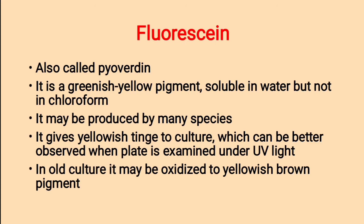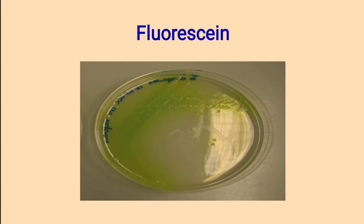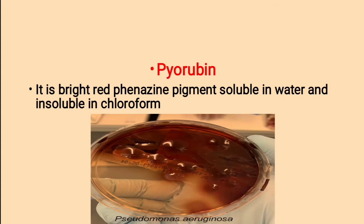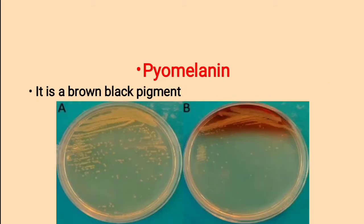Second pigment is Fluorescin, also called Pyoverdine. It is a greenish-yellow pigment soluble in water but not in chloroform. It may be produced by many species. It gives a yellowish tinge to culture, better observed when the plate is examined under UV light. In old culture it may be oxidized to a yellowish-brown pigment. This is the picture of Fluorescin pigment. Third, Pyorubin is a bright red phenazine pigment soluble in water and insoluble in chloroform. Fourth, Pyomelanin is a brown-black pigment.